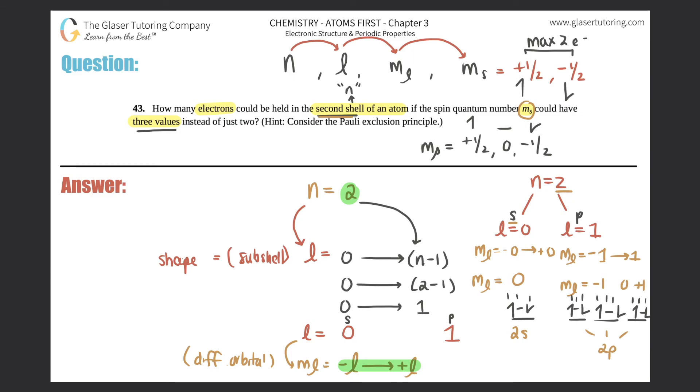So you would be able to have 12 electrons if the ms could have three values instead of just the two like it normally does. Normally you would have only two, four, six, eight electrons, but since we have three, you just say three, six, nine, and twelve. So that's why the answer is 12 electrons. That's the final answer, guys.